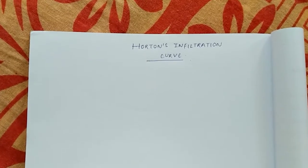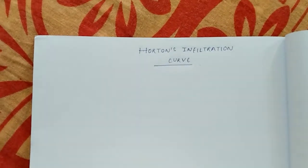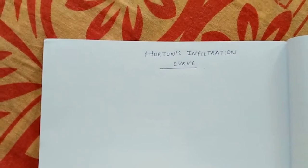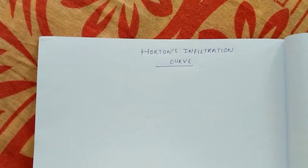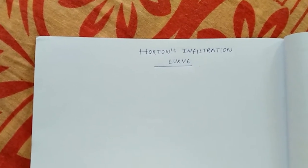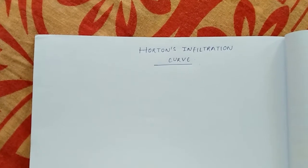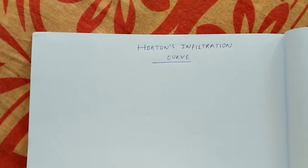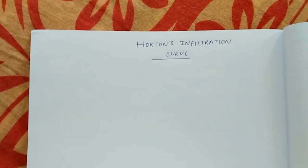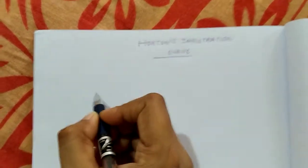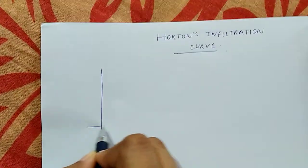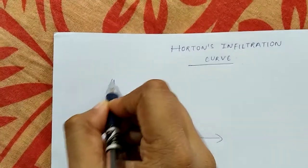Horton conducted infiltration tests on an infiltrometer and found that with respect to time, infiltration capacity decreases. It is not constant for a particular soil. It varies with respect to time for a given soil, and this decrease is exponential.